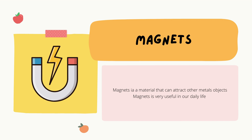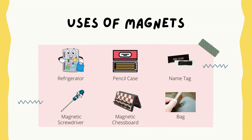We're going to look at the uses of magnets in our daily life. The first use is the refrigerator — there is a magnet installed in the refrigerator so that the door can be closed. The second one is the pencil case — there is a magnet in the pencil case so that it can close tightly.